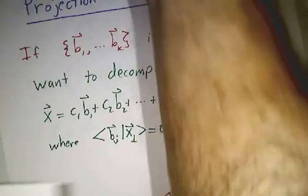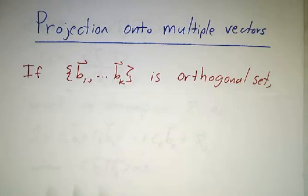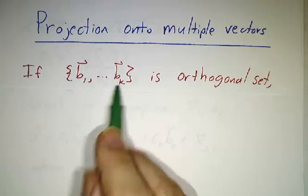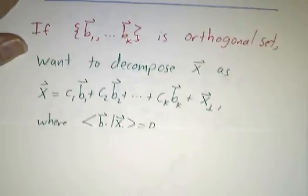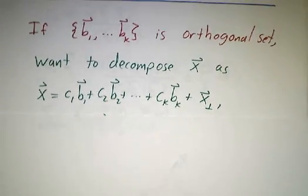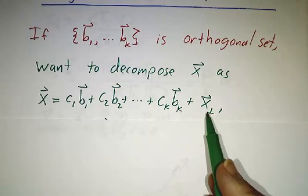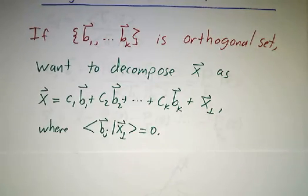Okay. So now we know how to project onto one vector. Now we want to see about how to project onto multiple vectors. And for this, we need the multiple vectors to be orthogonal. What I'm going to tell you does not work if the vectors are not orthogonal.